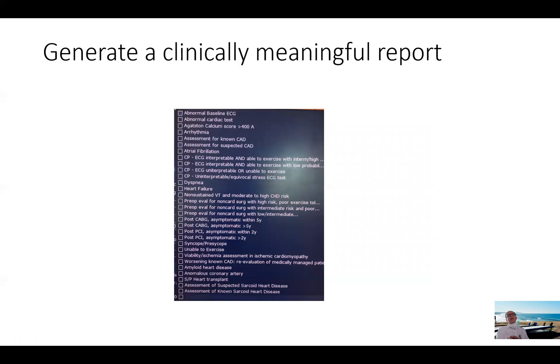More importantly, and finally, we have to generate a clinically meaningful report. In our system, at our center, we use the AUC, the appropriate use criteria for myocardial perfusion imaging, as an indication for the test. So these are all listed right here. And we have some special ones that are not addressed by the AUCs. One of them is amyloid heart disease, anomalous coronary arteries, heart transplant, sarcoid, known and unknown. So these are specialty, subspecialty things we look at. So we capture them within our system.